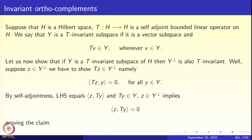Now that the difficult part is done, let us finish the proof. H is a Hilbert space. T from H to H is a self-adjoint bounded linear operator on H. Right now, we don't need compactness. We say that Y is a T-invariant subspace — this is a purely algebraic notion. T-invariant subspace means whenever v belongs to Y, Tv also belongs to Y; that is, T of Y is contained in Y. Now let us prove that if T is bounded self-adjoint and Y is T-invariant, then Y-perp is also T-invariant.